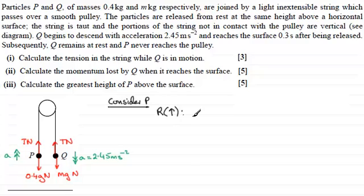So resolving upwards using Newton's second law, force equals mass times acceleration, we've got the tension T minus the weight of P, that's minus 0.4g, equals the mass of P which is 0.4 kilograms times the acceleration which is 2.45. So we just need to rearrange this for T by adding 0.4g to both sides.